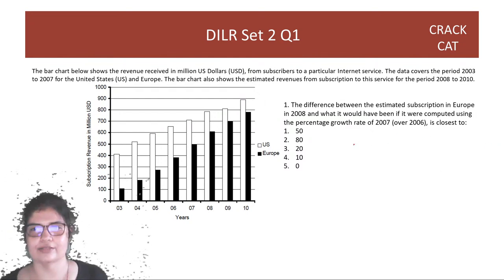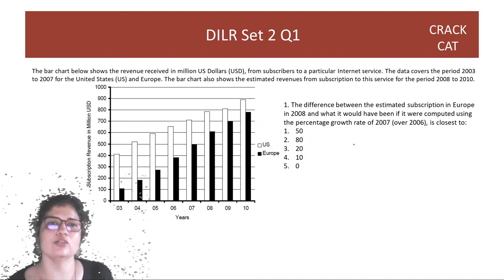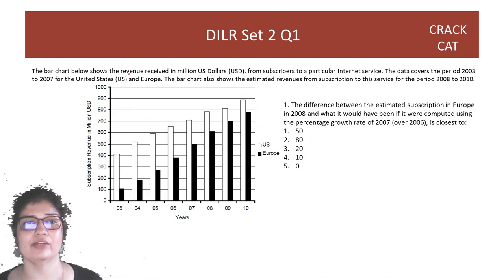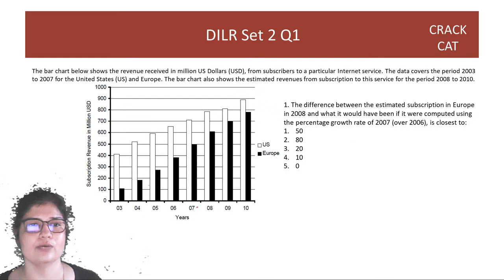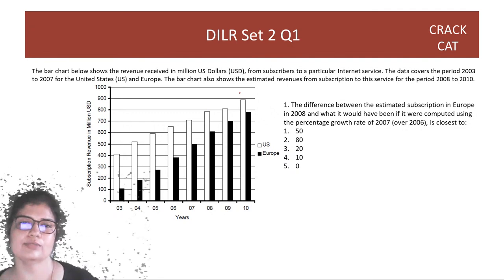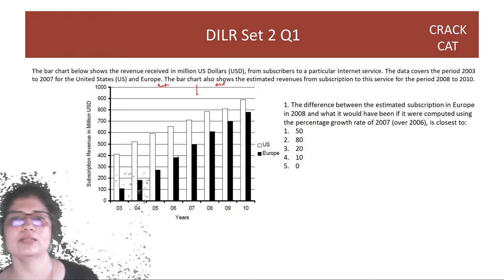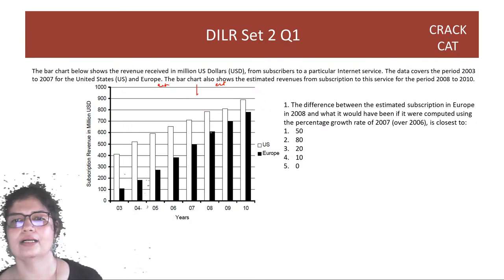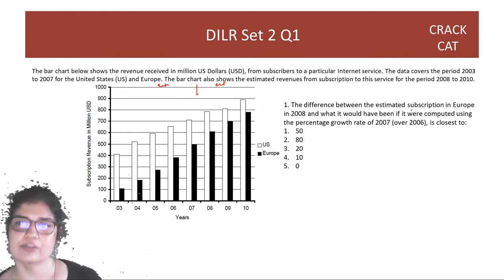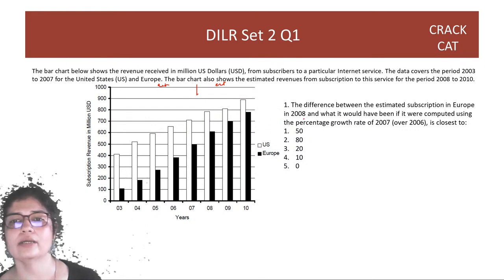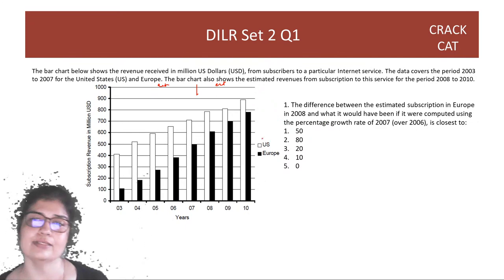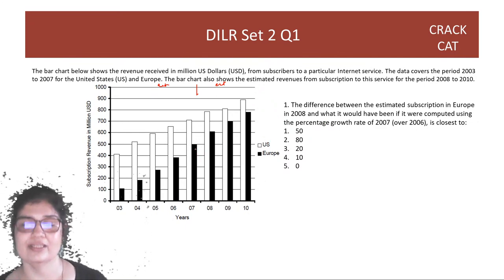The bar chart shows revenue received in USD from subscribers to a particular internet service. The data covers actual figures from 2003 to 2007 and estimated figures from 2008 to 2010, with US and Europe shown separately.